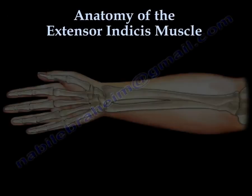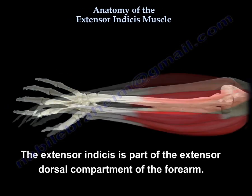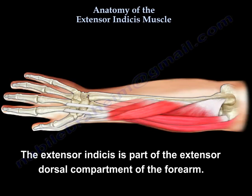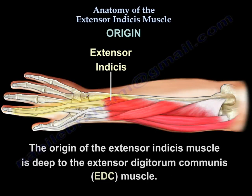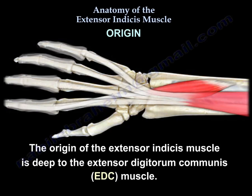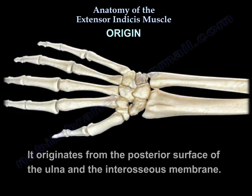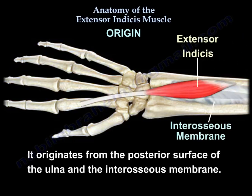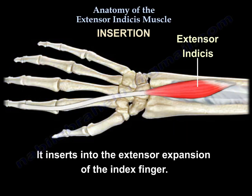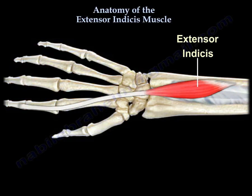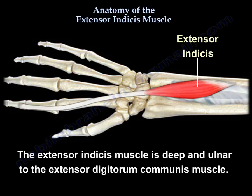The extensor indices muscle is part of the extensor dorsal compartment of the forearm. It is deep to the EDC, the extensor digitorum, originating from the posterior surface of the ulna and interosseous membrane. It inserts into the extensor expansion of the index finger.